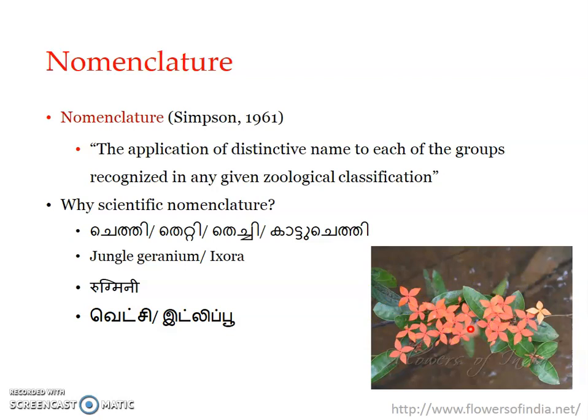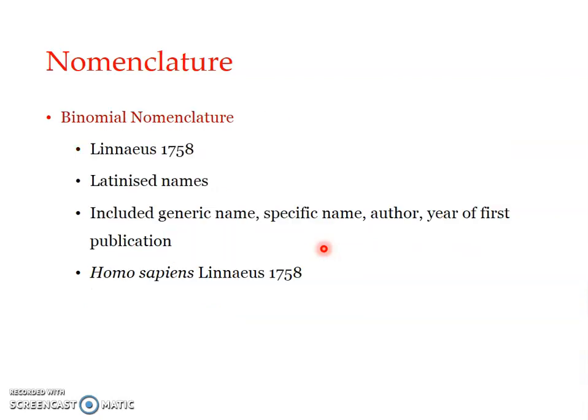A scientific system of nomenclature allows communication in any part of the world. For example, if you are working on Ixora coccinea and want to communicate with someone in the Malayan archipelago or Philippines where this flower is found, you cannot use the Malayalam name as it may not be familiar there. Using scientific nomenclature makes it easy for scientists working on the same group of organisms to communicate globally.